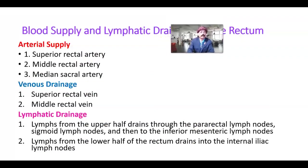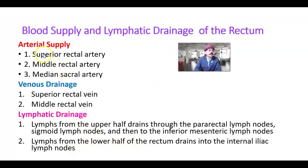Blood supply and lymphatic drainage of the rectum is very important. Arterial supply: the superior rectal artery, a branch of the inferior mesenteric artery; the middle rectal artery, usually a branch of the internal iliac artery; and the median sacral artery, a dorsal branch from the lower abdominal aorta just before bifurcation. Venous drainage: the superior rectal vein drains into the inferior mesenteric vein, opening into the splenic vein — part of the portal system. The middle rectal vein is a tributary of the internal iliac vein, part of the systemic or caval system.